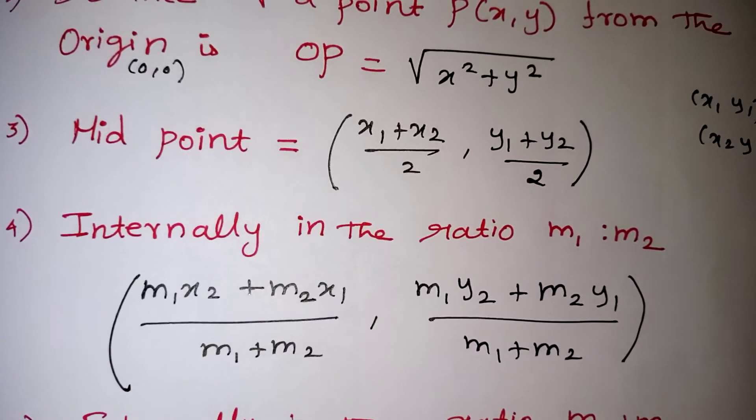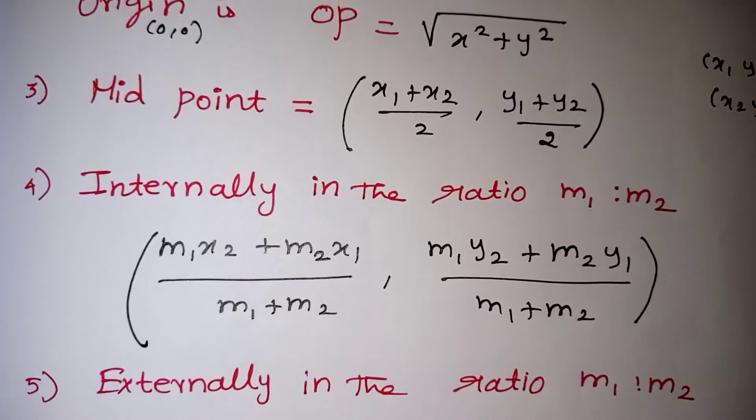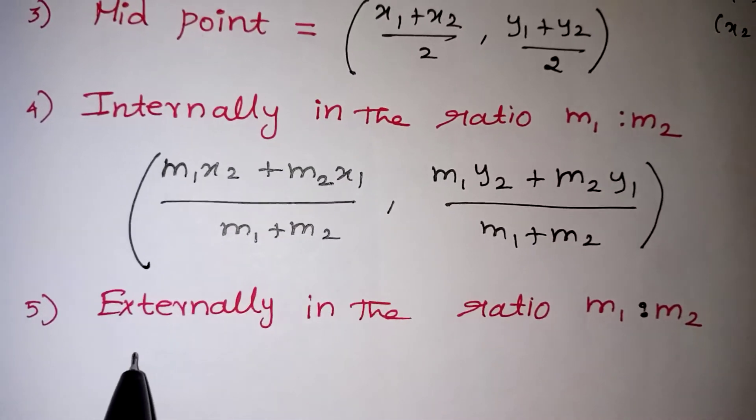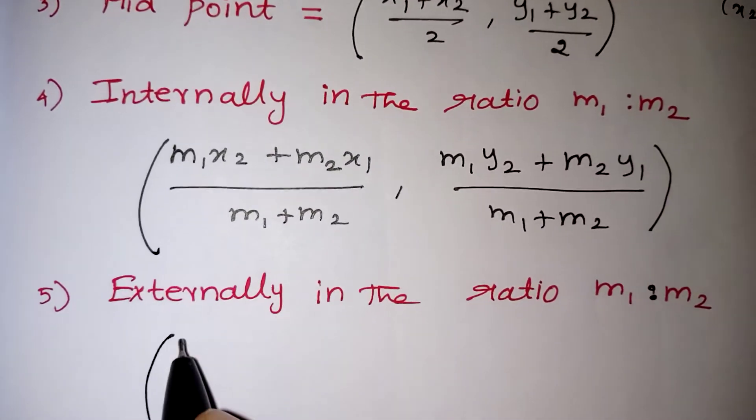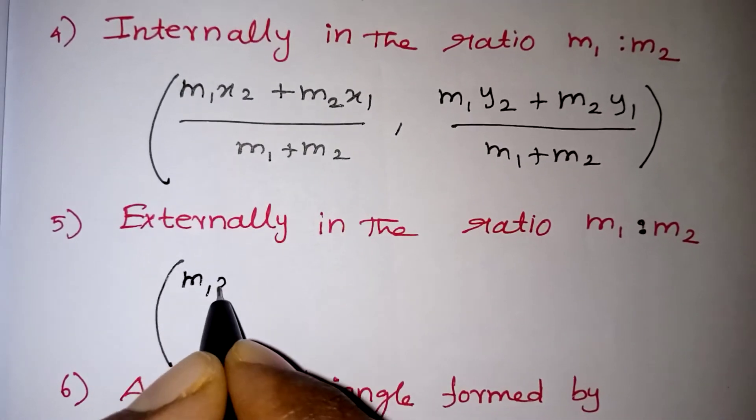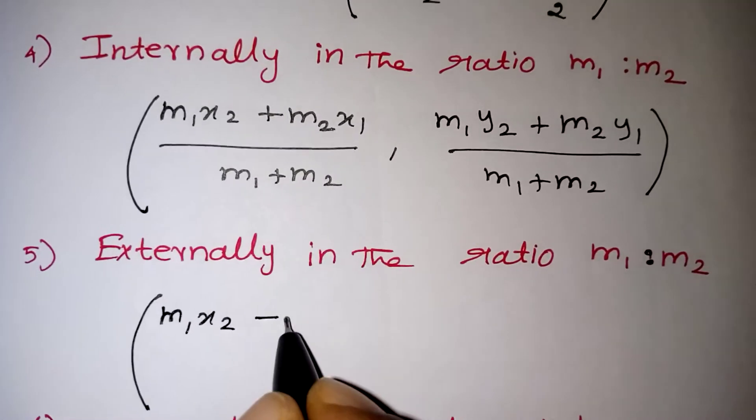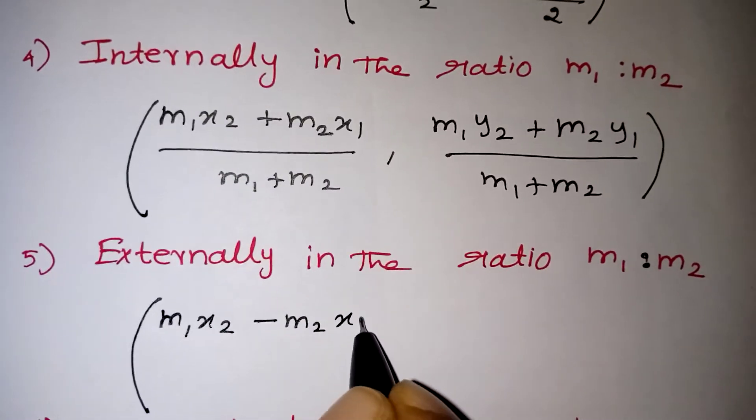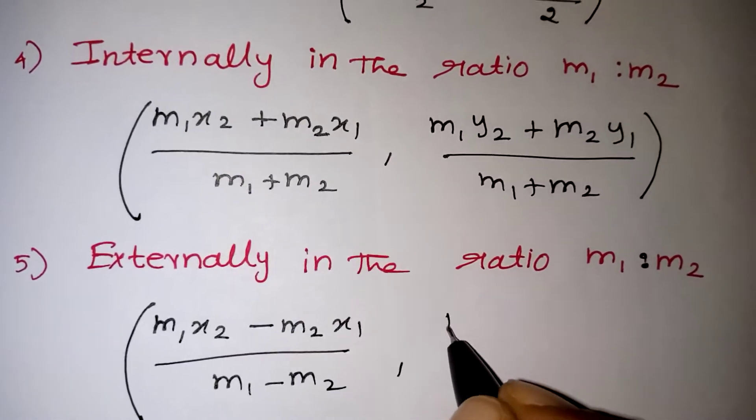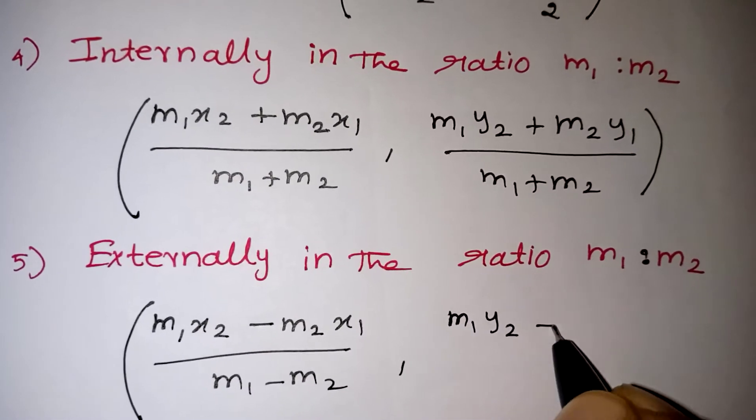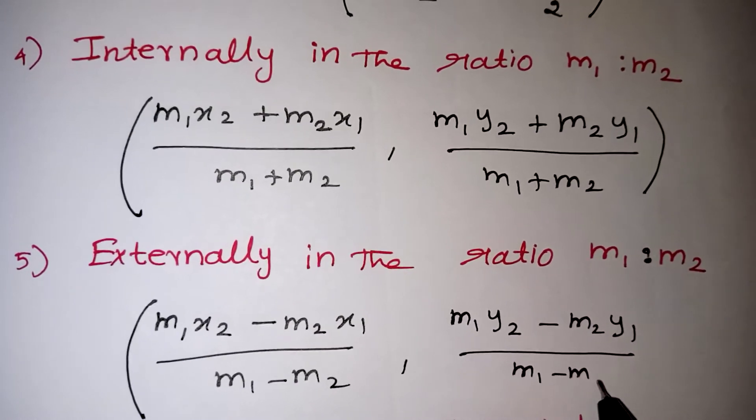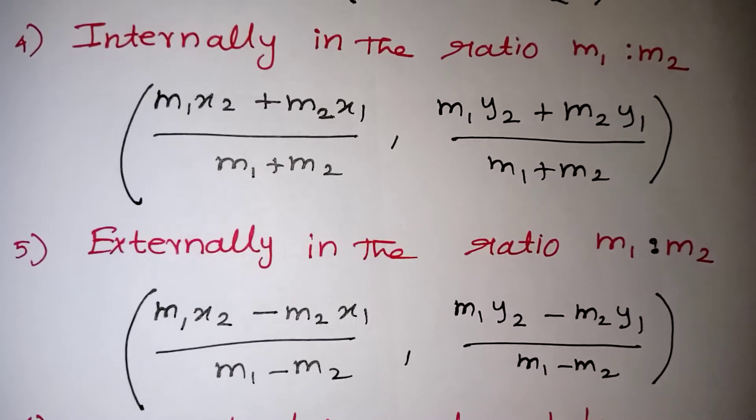Same thing for externally also. Externally in the ratio m1 is to m2 is a question. So ratio is given. Now, the same formula for internally. Only the symbol will vary, you have to use the minus sign. Same formula m1 x2 minus m2 x1 by m1 minus m2. Here, the same formula m1 y2 minus m2 y1 by m1 minus m2. This is the formula for externally.